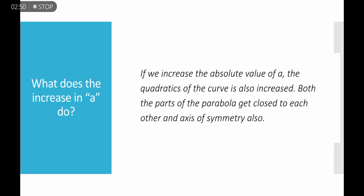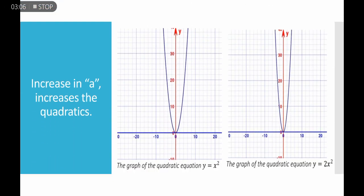If we increase the absolute value of a, the curvedness of the curve is also increased — both parts of the parabola get closer to each other and to the axis of symmetry. For example, the graph of y = x² has a = 1, while y = 2x² has a = 2. Increasing a increases the curvedness of the graph.